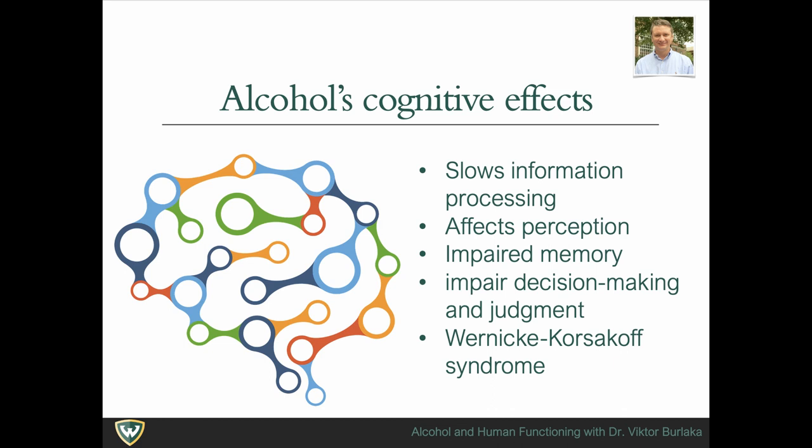The syndrome consists of two separate conditions. Wernicke encephalopathy is a short and severe condition. It includes mental confusion, paralysis of the nerves that move the eyes, and difficulty with muscle coordination. For example, patients may be too confused to find their way out of a room, or may not even be able to walk.